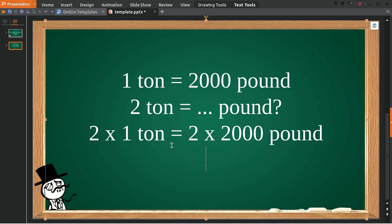All right, now two times one is equal to two tons, equal to two multiply two thousand, is equal to four thousand pounds. And that's the answer. That's how you answer this question, how you solve the problem.